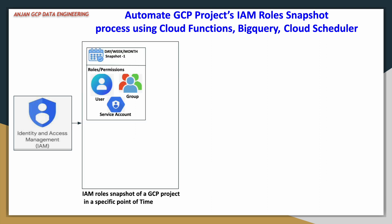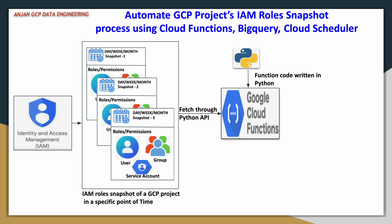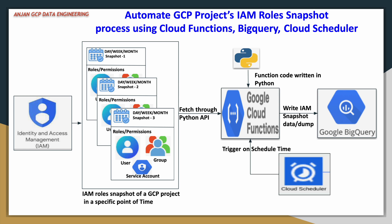We will take snapshots at different periods — day, week, or month — and using the Python API we are going to write logic inside a Cloud Function, which will get this information, append the timestamp to each snapshot, and write the data into BigQuery. We will use Cloud Scheduler to automate this entire process, which would trigger our Cloud Function on a periodic schedule.